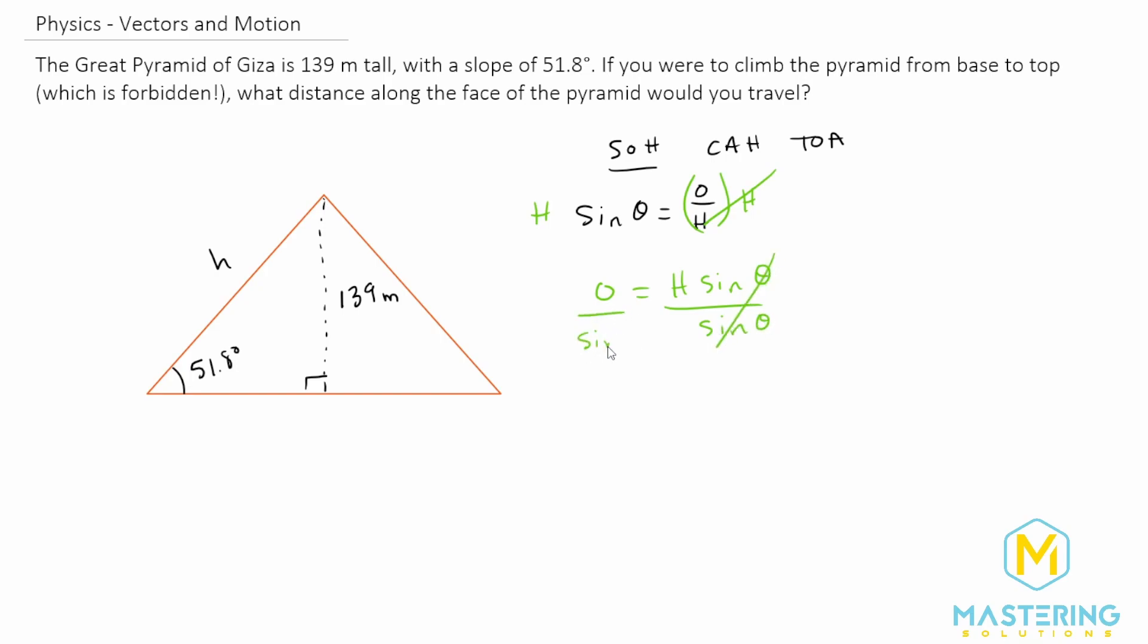And sine of theta. So now our final equation is the hypotenuse in this case will be equal to the opposite of the angle divided by the sine of the angle.